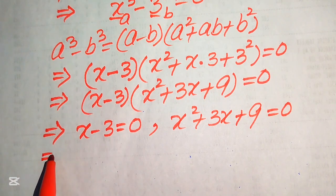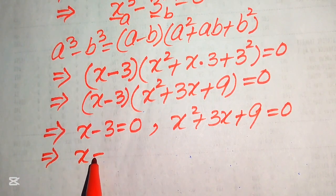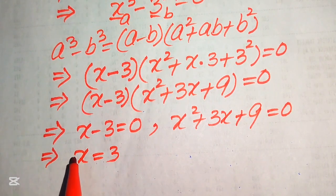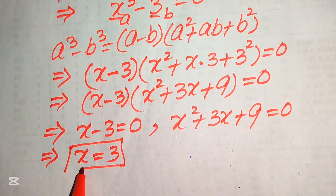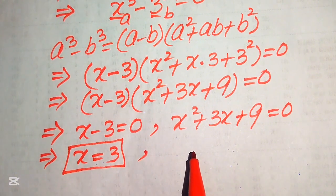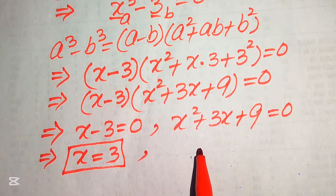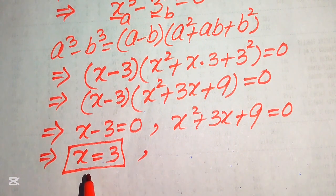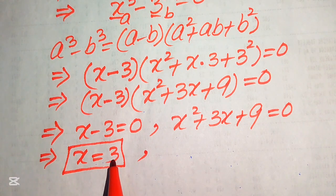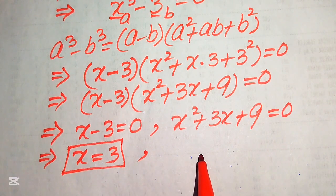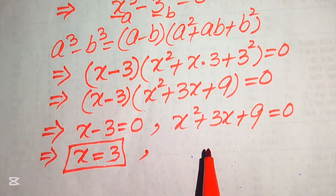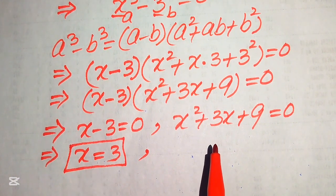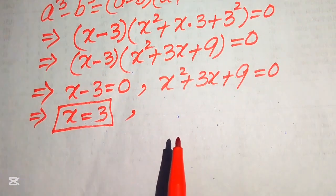From Case 1 we easily get x equals 3, which is the first real solution of the given equation. Case 2 is a quadratic equation, so to find the other roots we need to solve this quadratic equation.